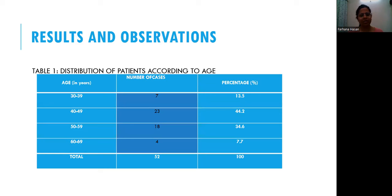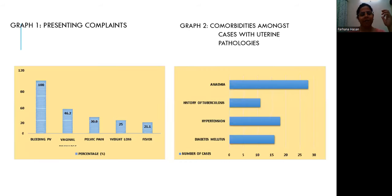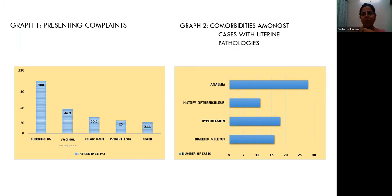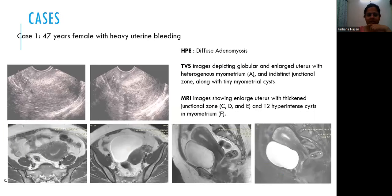The 40 to 49 year old patients made up the majority of our sample. Most women had bleeding per vagina as the presenting complaint, followed by vaginal discharge, pelvic pain, weight loss, and fever. Anemia was the most common comorbidity associated with these women, followed by hypertension.